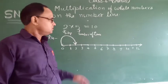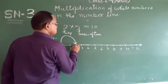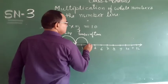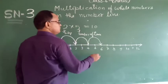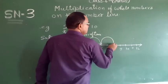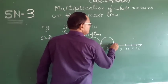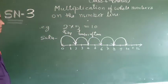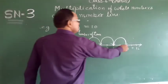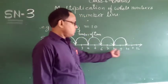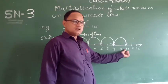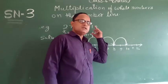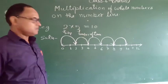Thus we show it: step 1, step 2, step 3, step 4, step 5. So we go on to the number 10. 10 is the result of the multiplication of the two whole numbers 2 and 5.